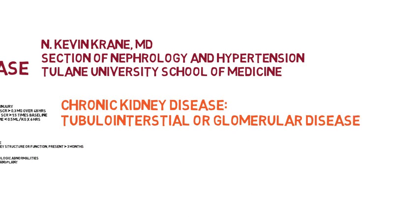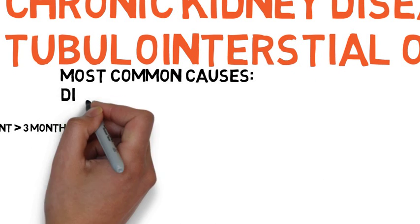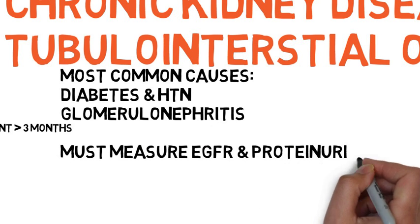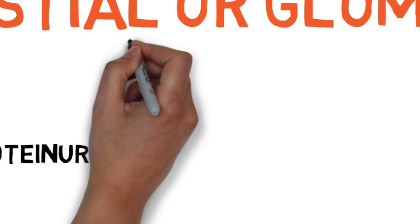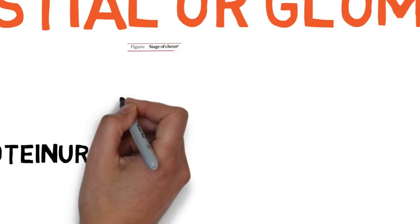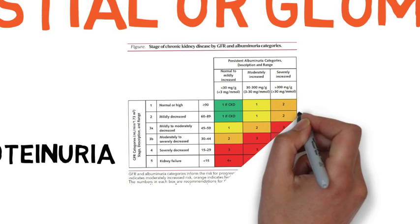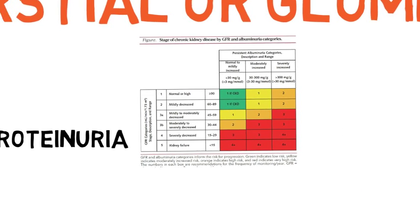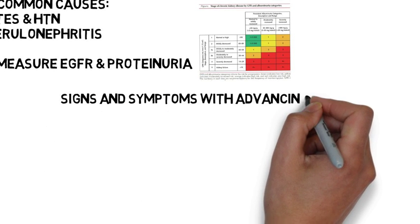Chronic kidney disease can be either tubulointerstitial or glomerular. The most common causes are diabetes and hypertension, followed by glomerulonephritis. We always look at the estimated GFR and the degree of proteinuria in evaluating patients, because we stage patients for chronic kidney disease based on their GFR, which tells us where they are in progressive chronic kidney disease and helps with management.